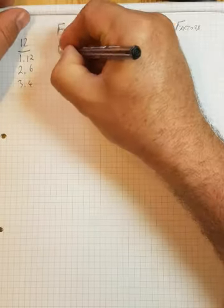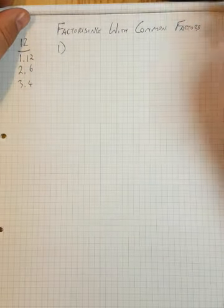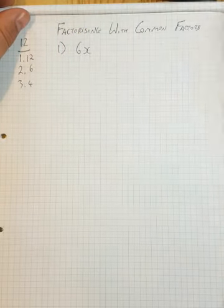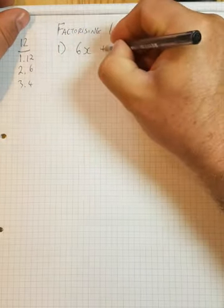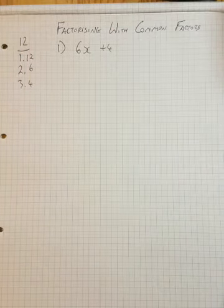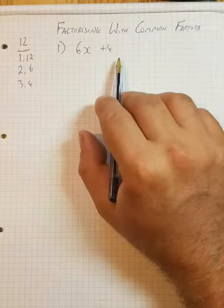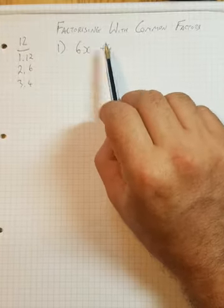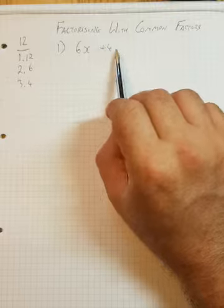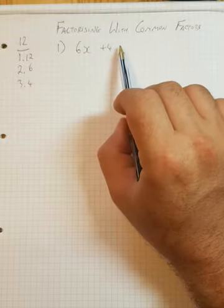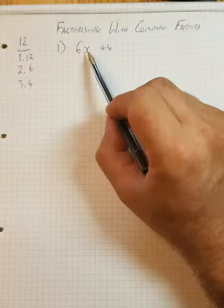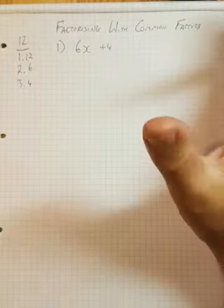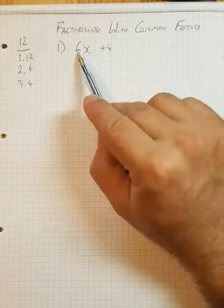Alright, so my first example here. Let's see if we have 6x plus 4. So what we want to do is factorize this. You want to know, well, what is the largest term that goes into both the 6x and the 4, into both of these different things. So it can't be x because while x goes into x here, there's no x term here. So it has to be a number.